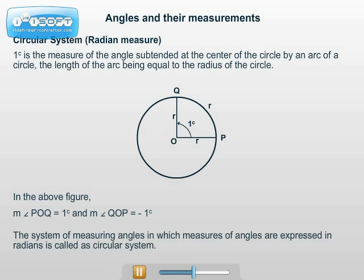The system of measuring angles in which the measures of angles are expressed in radians is called the circular system. We note that if the measure of angle POQ is 1 radian, then the 1 radian measure is independent of the radius of the circle.